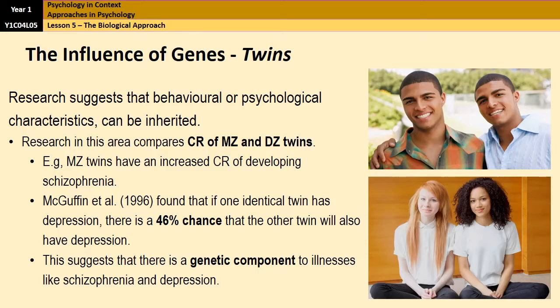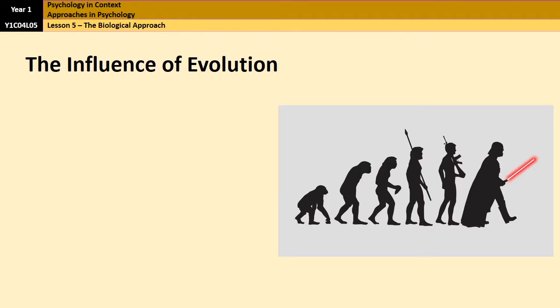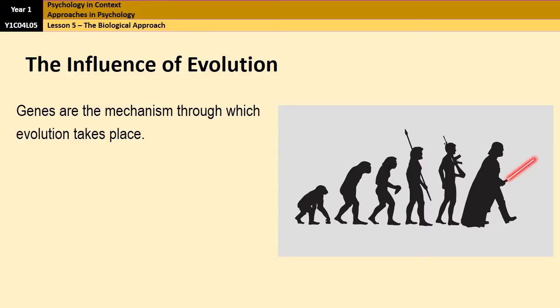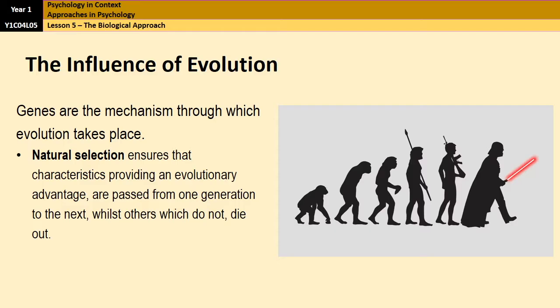Sticking with genes, we're now going to look at the influence of evolution, because genes are the mechanisms through which evolution takes place. Genes get passed on from one generation to the next, taking with them desirable characteristics that enhance chances of survival — which is natural selection. The idea is that characteristics providing an evolutionary advantage are passed on from one generation to the next, and the same applies to psychological traits and preferences that enhance a species' survival.